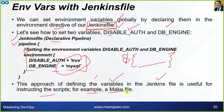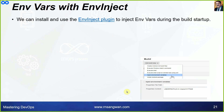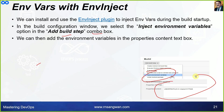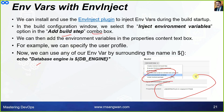You can also install the EnvInject plugin to inject environment variables during build startup. In the build configuration window, select Inject Environment Variables and add a build step. Specify the property file and variable name in the properties text box. For example, you can reference a variable using ${DB_ENGINE}, and the output will display 'Database engine is MySQL' as specified in the environment variable.